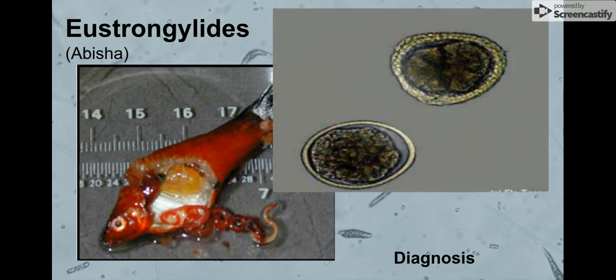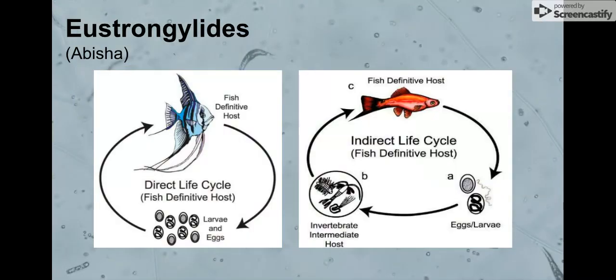They are also characteristic of these very tough eggs that they have. The difference between a direct life cycle and an indirect life cycle is the presence of an intermediate host.